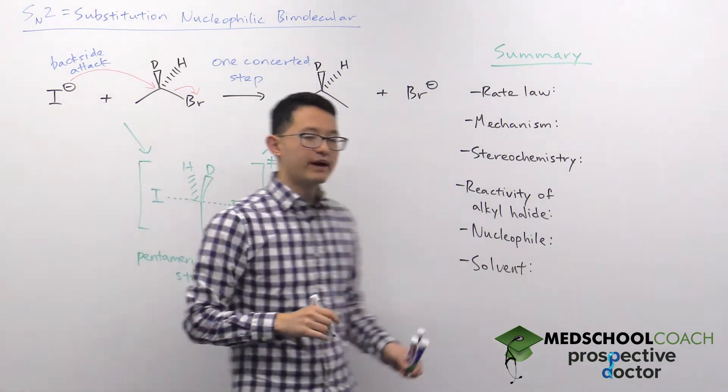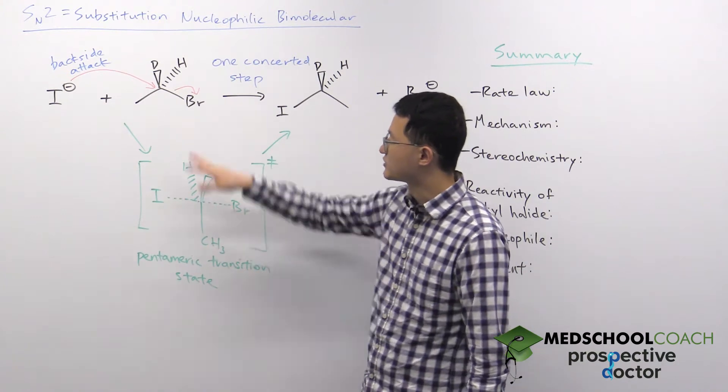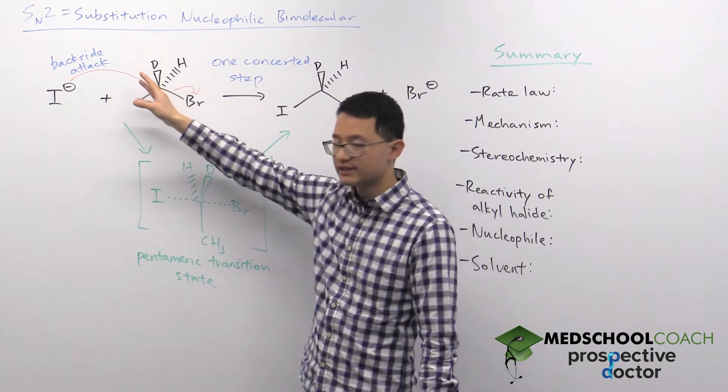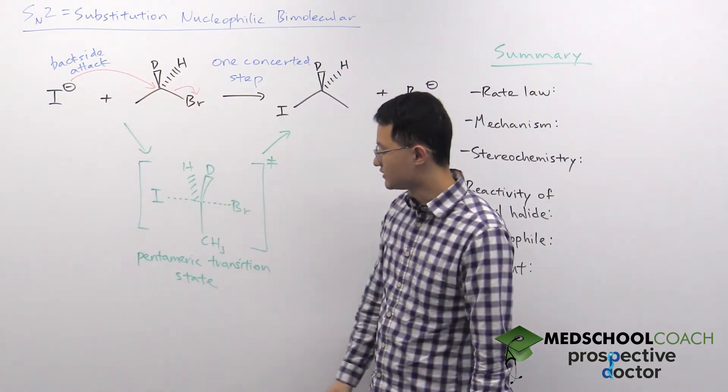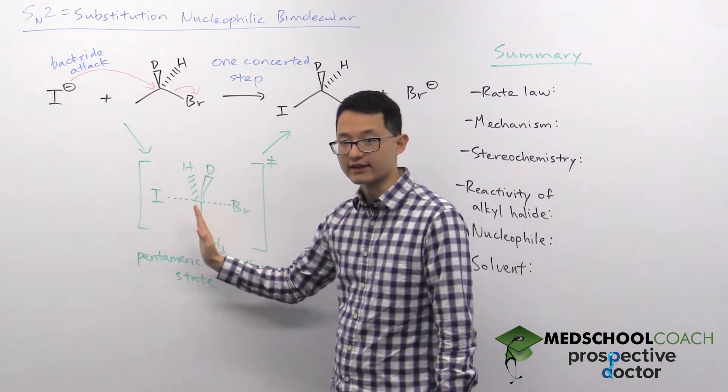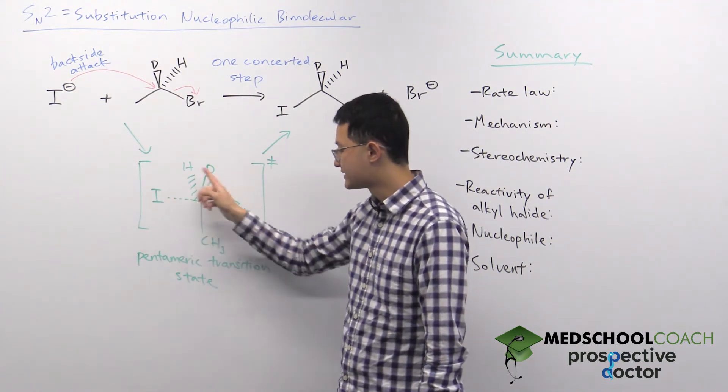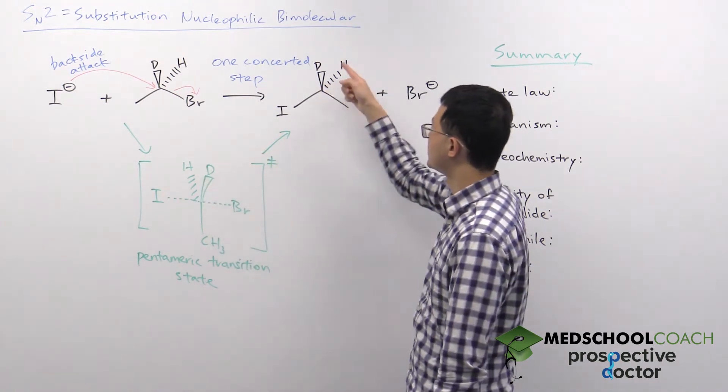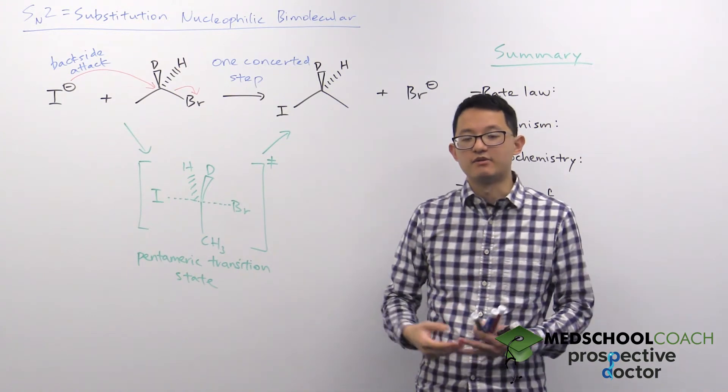What's helpful about this diagram is you can kind of see what's happening during the reaction. At first, this bromine is facing the right and the deuterium hydrogen and methyl group, they're oriented on the left. But the instant the iodine comes in to make its nucleophilic attack, these three groups basically get flattened vertically. And as the iodine makes its attack and pushes away the bromine, the three groups then get pushed to the right side of the molecule.